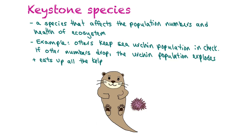A keystone species is a species that affects the population numbers and the health of an ecosystem. An example would be otters, which keep sea urchin populations in check. If otter numbers drop, the urchin population will explode and they will eat up all the kelp, which will cause other ramifications within the ecosystem.